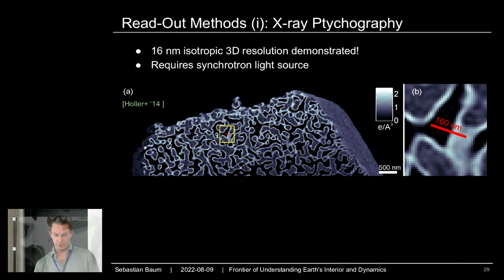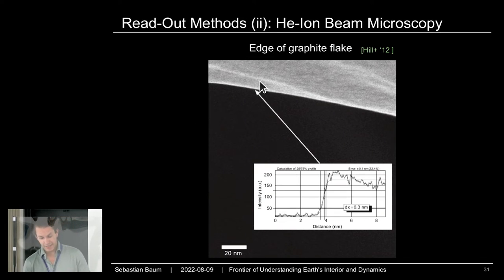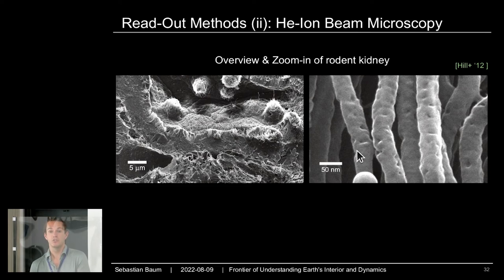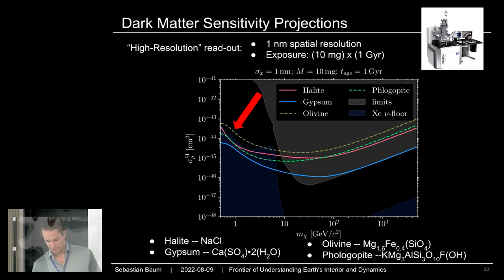Another option for better resolution is the helium ion beam microscope, which is now commercially available. You shoot a helium ion beam at your sample and measure backscattered electrons or helium ions, achieving sub-nanometer scale resolution — they resolved a sample edge at 0.3 nanometers. Something really useful about this technology is it's zoomable: you can image a larger field of view and then zoom in on a part of the sample that interests you. These machines cost a few hundred thousand dollars; there are actually two of them in Japan, and there may be attempts to use one to look for tracks.